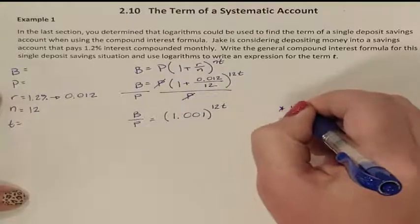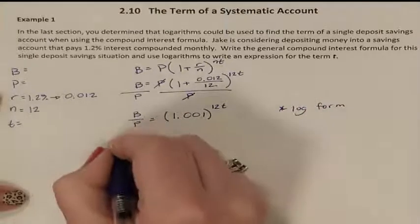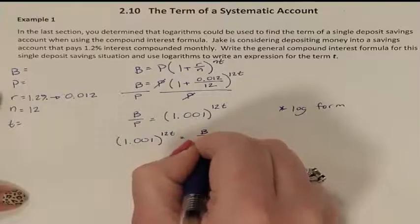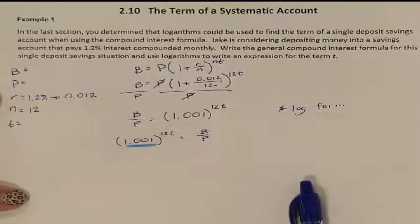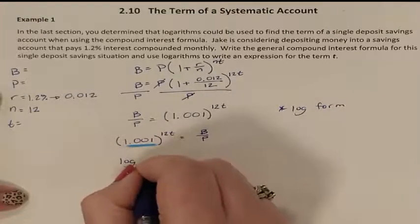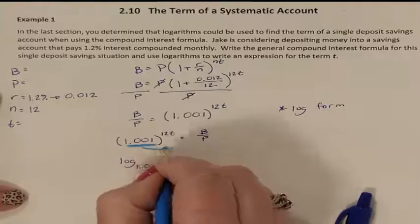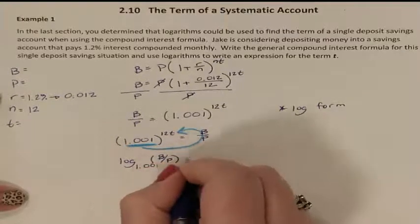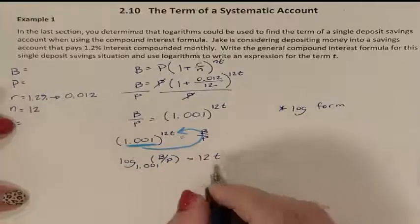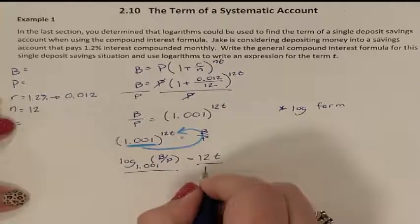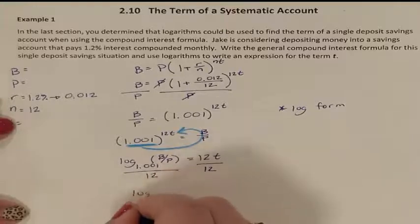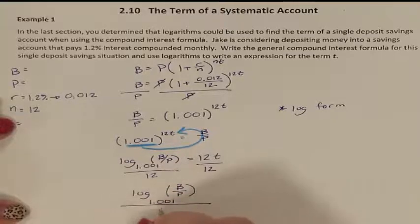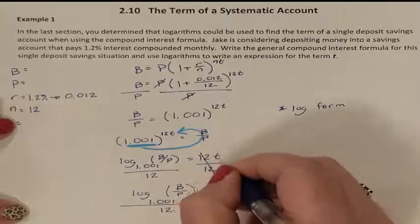It's in exponent form; I need it rewritten in log form. To do that, I need to see the exponent part written first so I can identify my base. So I know this is going to be log base 1.001 of the fraction B over P, equaling 12t. We were asked to solve for t, so divide both sides by 12. So I have log base 1.001 of (B over P), all divided by 12, giving me t.